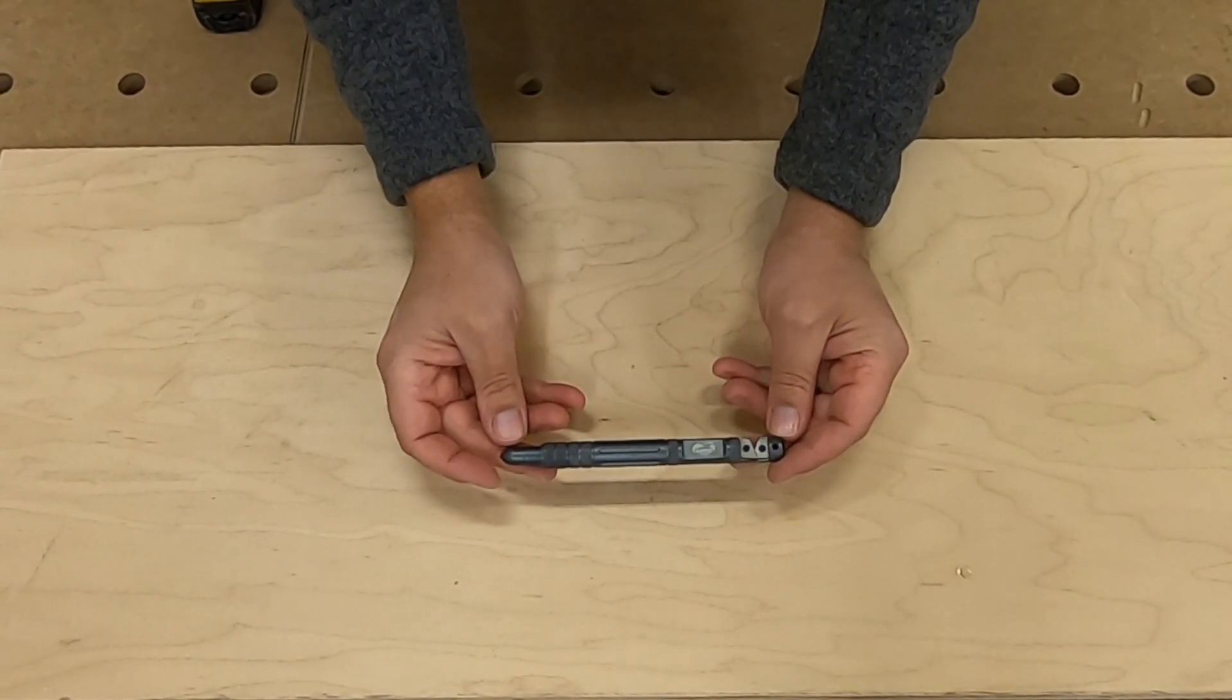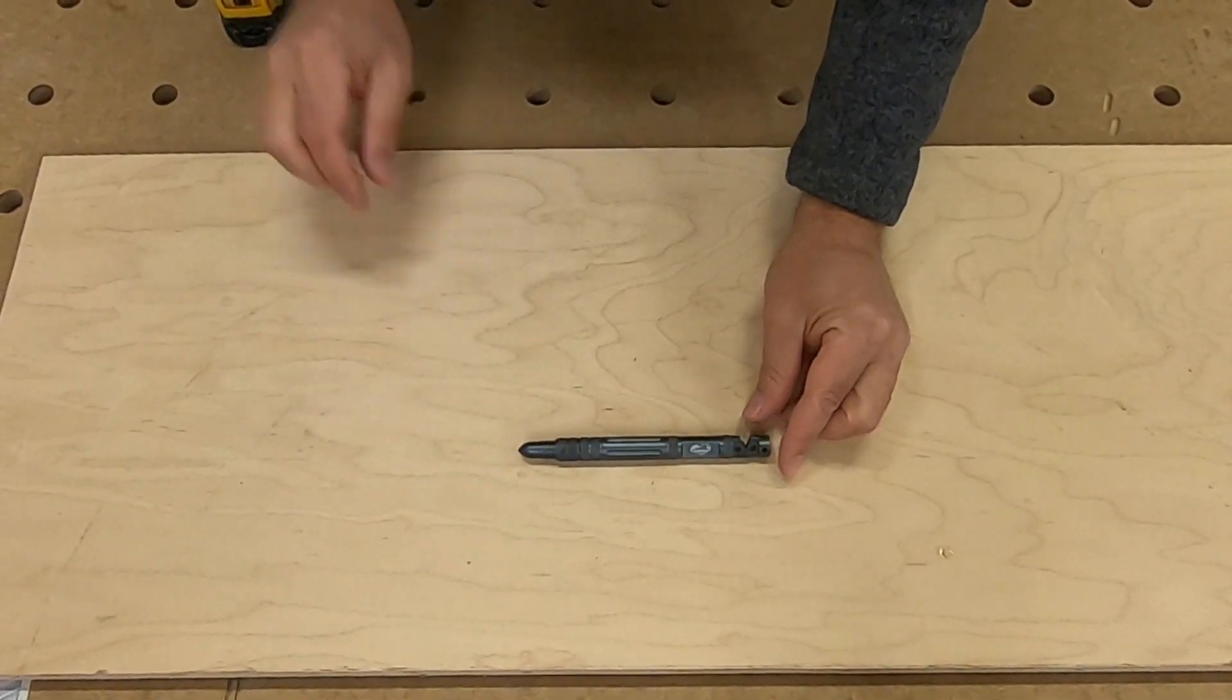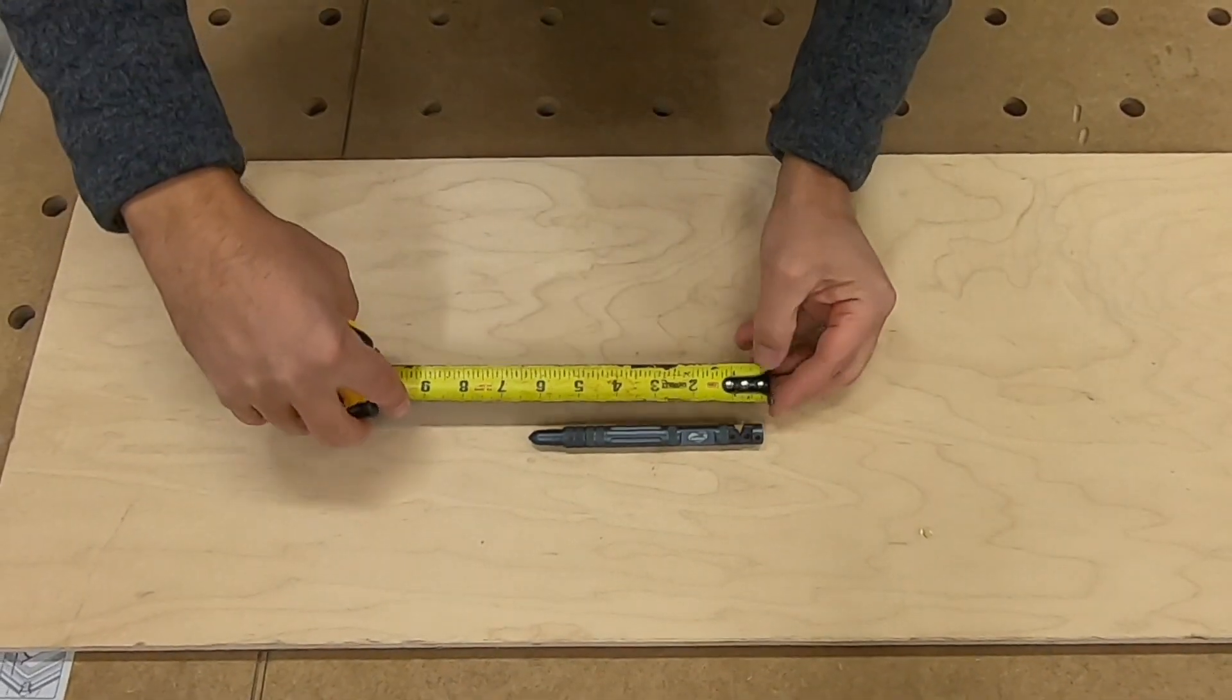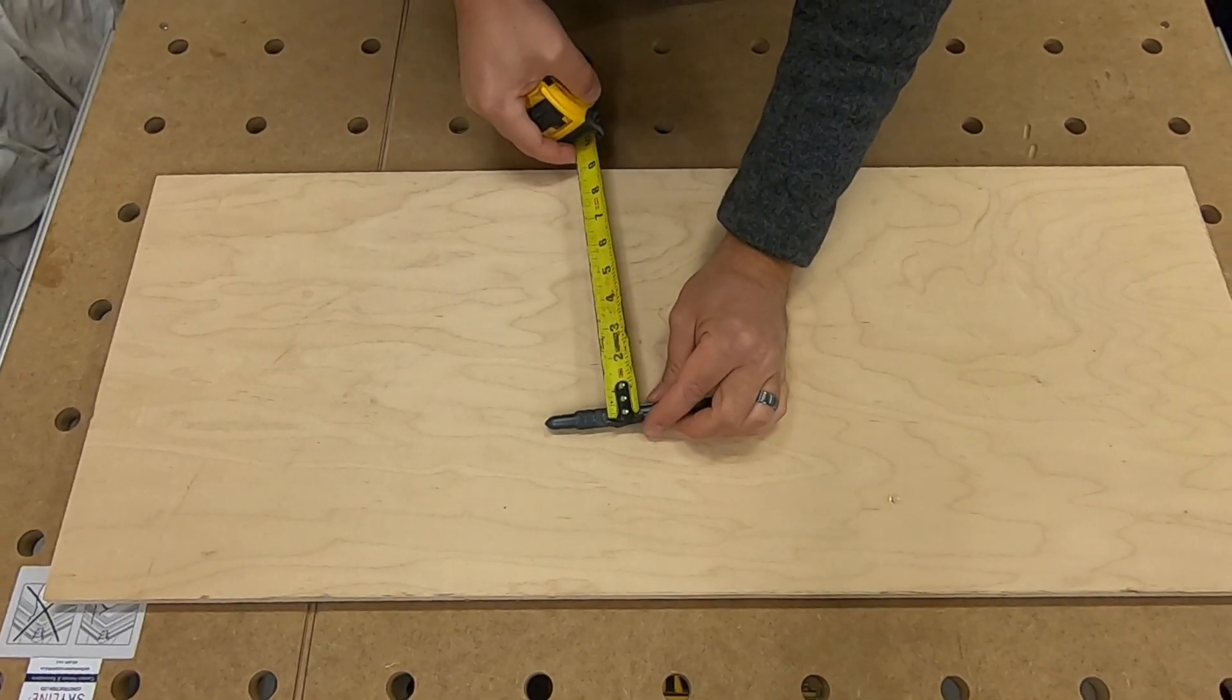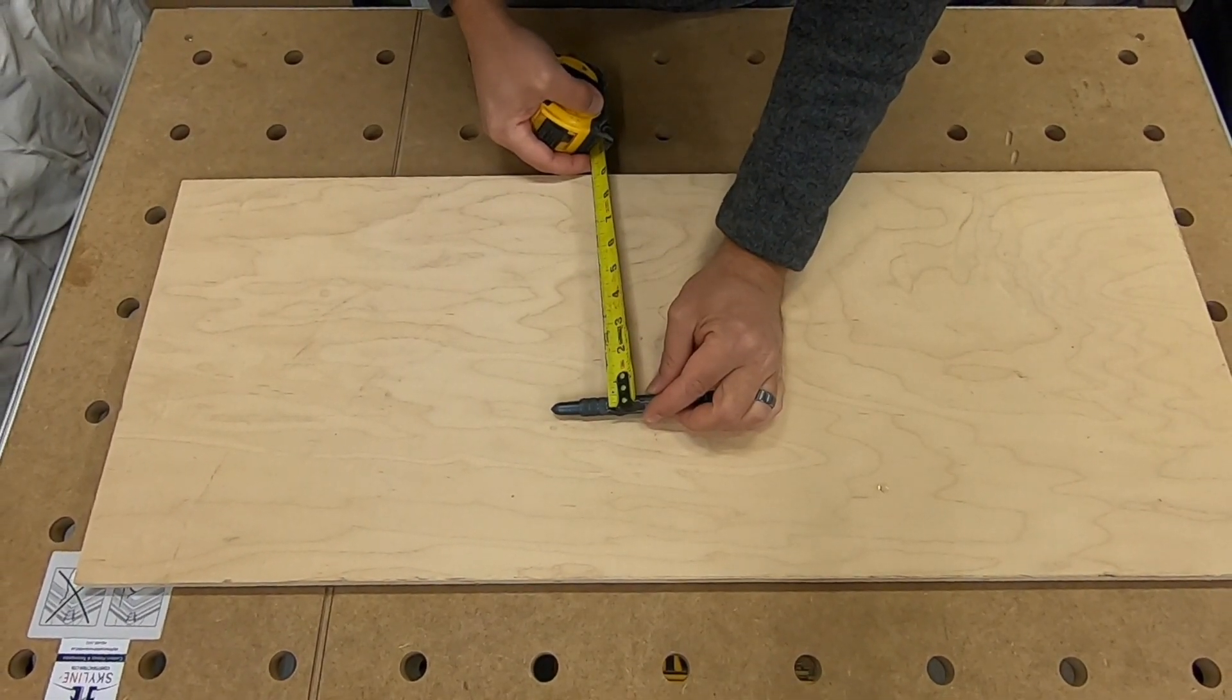So this tool is primarily made out of aluminum. It measures six inches long, and just a hair over, six and a quarter, and it's about a half an inch wide.